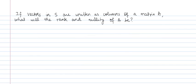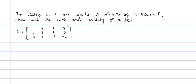The next question is: if the vectors in S are written as columns of a matrix A, what will be the rank and nullity of A? Let us write down A. The vectors in S are written as columns of the matrix A, giving the 3×4 matrix with columns (1,2,0), (0,3,1), (3,3,-1), and (3,0,-2). Once you have this matrix, you use Gaussian elimination to find the rank.